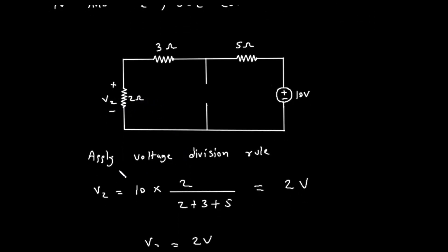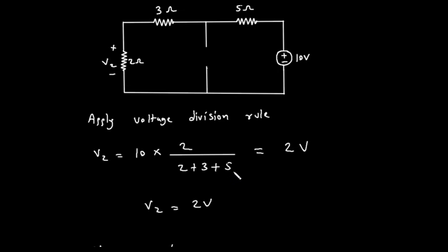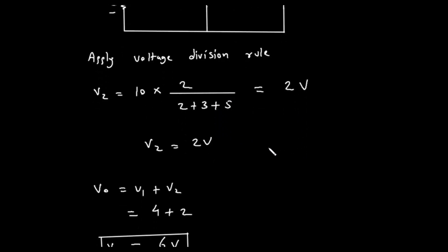We want to find the voltage V2 across the 2 ohm resistor. We can use the voltage divider rule. The voltage divider rule states that the voltage across a particular resistor in a series circuit is the total voltage multiplied by the ratio of that resistor's resistance to the total resistance. The total resistance in the series circuit is 2 ohms plus 3 ohms plus 5 ohms, which equals 10 ohms. So V2 equals 10 volts multiplied by 2 ohms over 10 ohms. V2 equals 10 multiplied by 2 divided by 10, which simplifies to 2 volts.